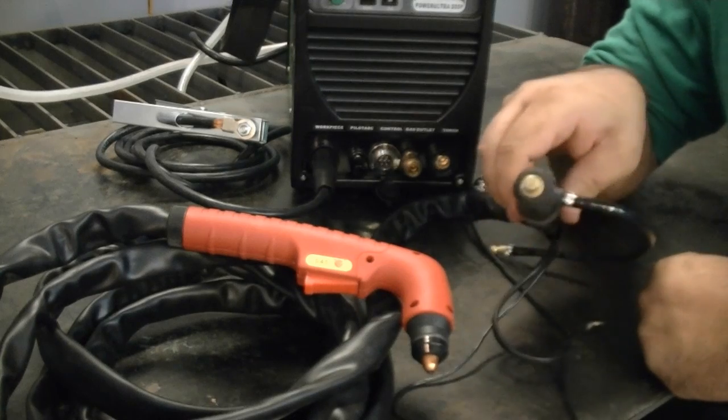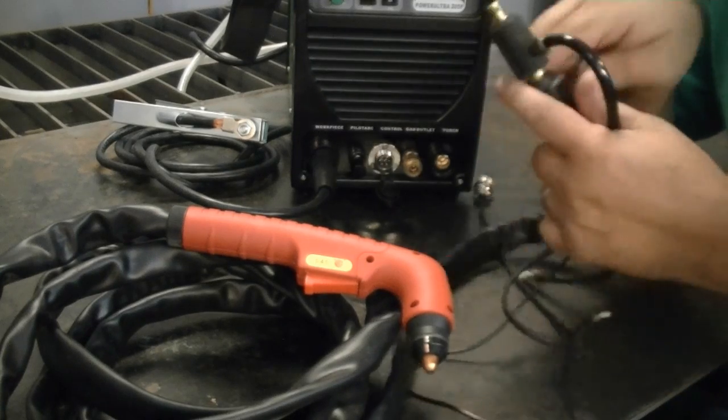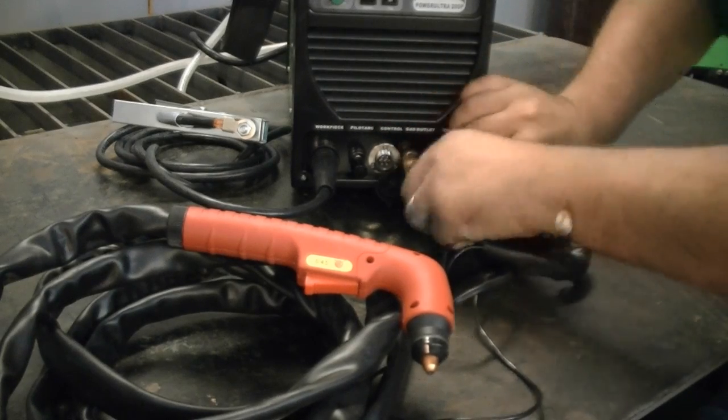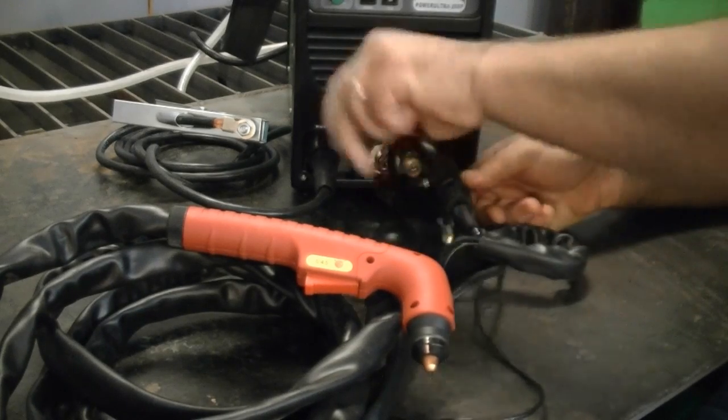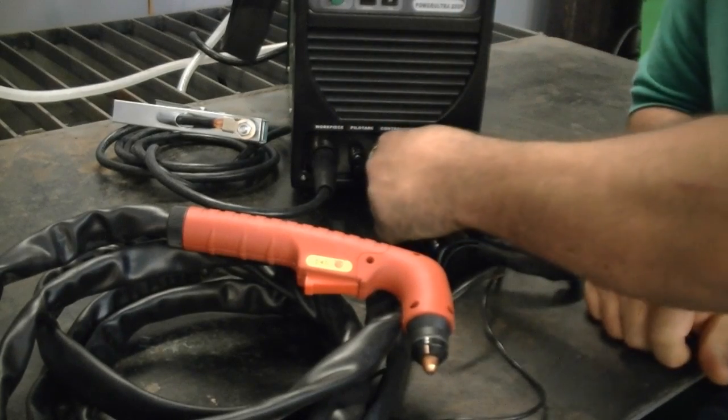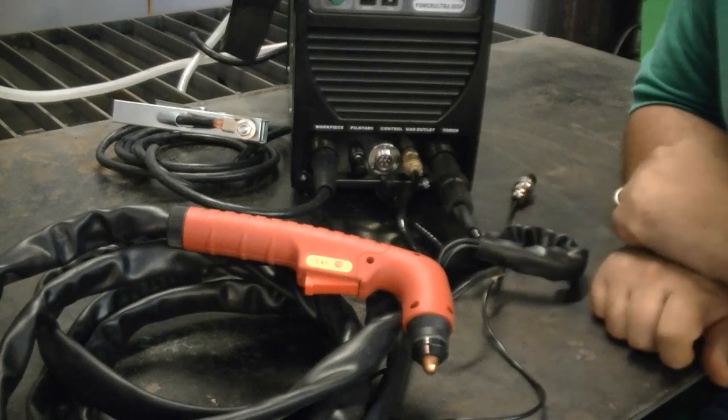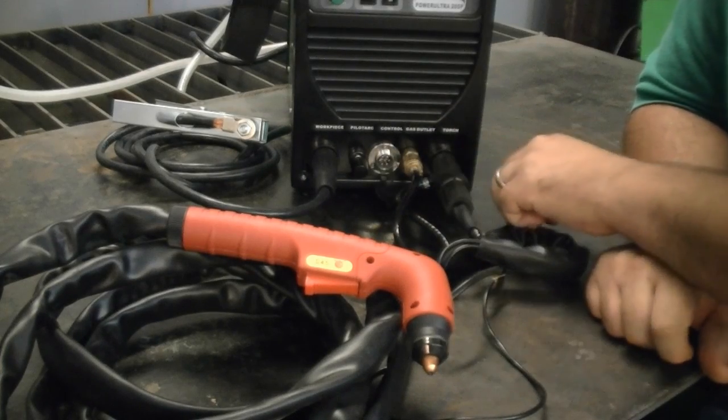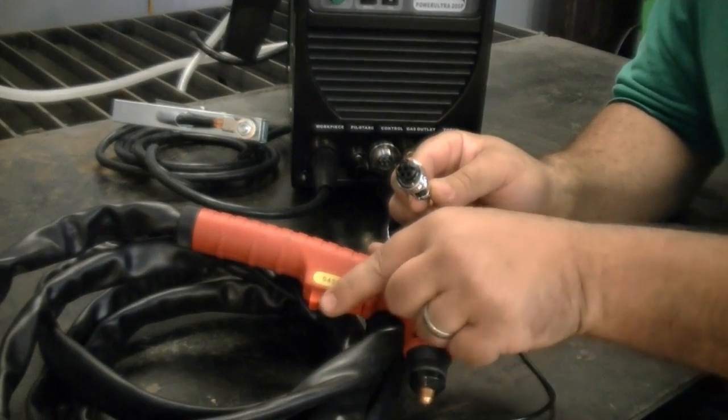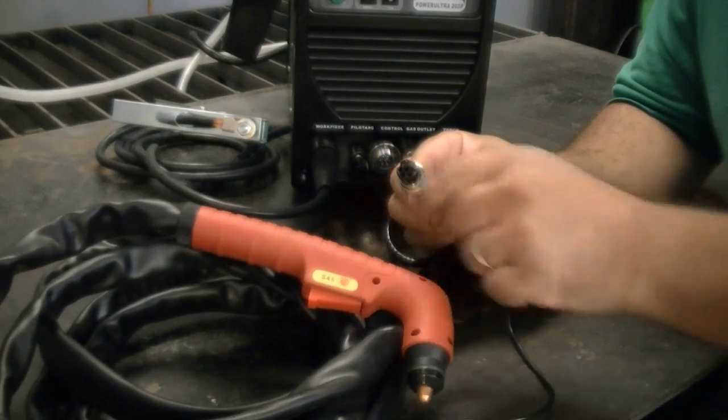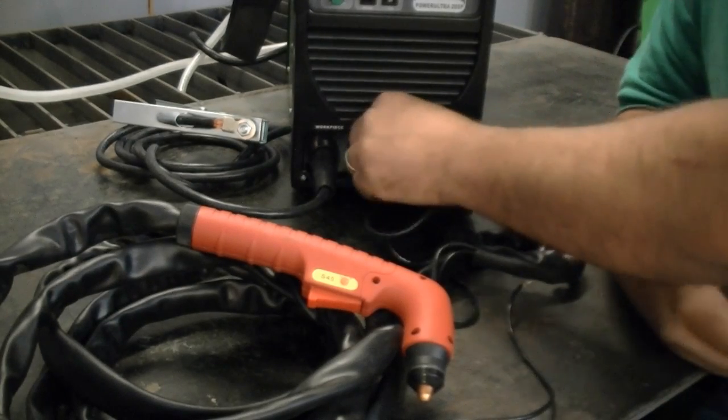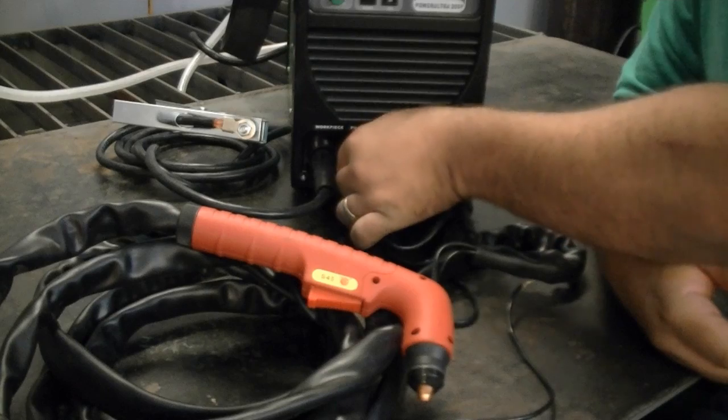To connect your torch, locate your power connector. Once again, use the right side of the unit to connect. Simply stick it in and twist it until it's tight. Take your gas line, once again, and stick it in here. You're going to have some wires that may cross here. Just simply try to route them the best that you can. Next, we're going to connect the control. This is simply the switch to start and stop the arc for the plasma cutter. Connect it the same way you would do the torch switch on the TIG.